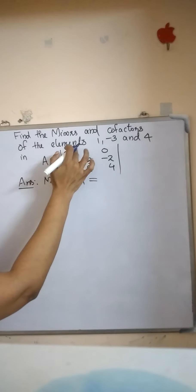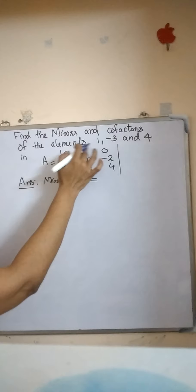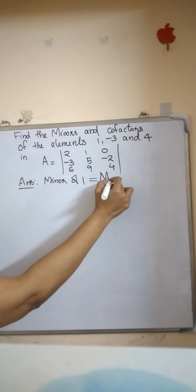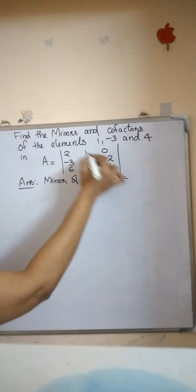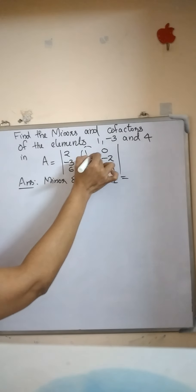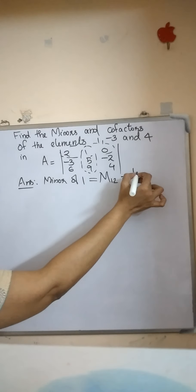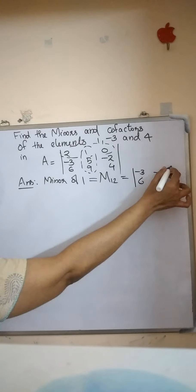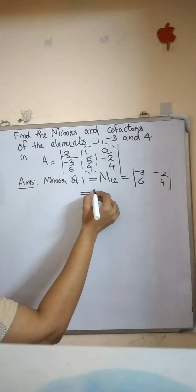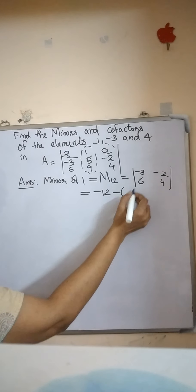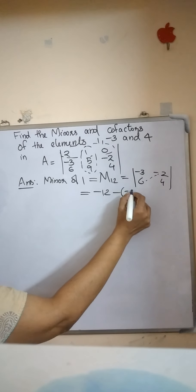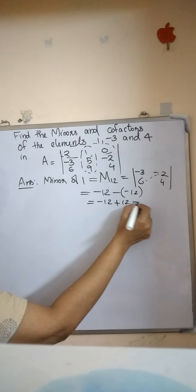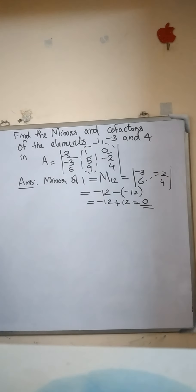The element 1 belongs to the first row and second column, so its minor is M12. By deleting the second column and the first row, we get the determinant minus 3, minus 2, 6, 4. That equals minus 12 minus (minus 12), which is minus 12 plus 12, equal to 0. So the minor of 1 is 0.